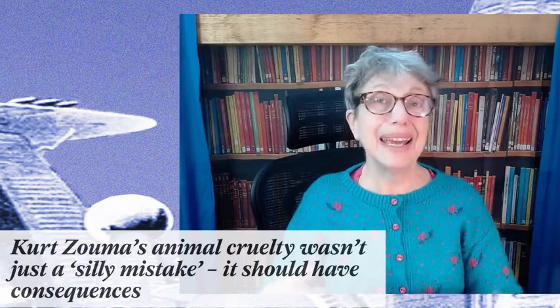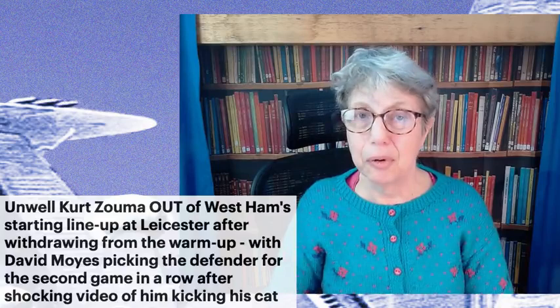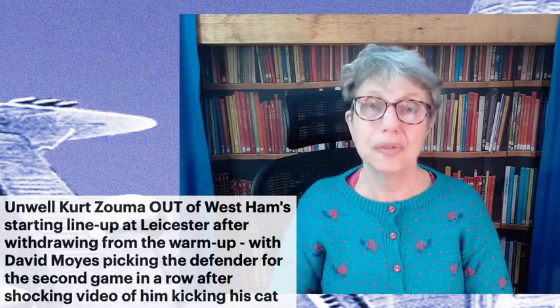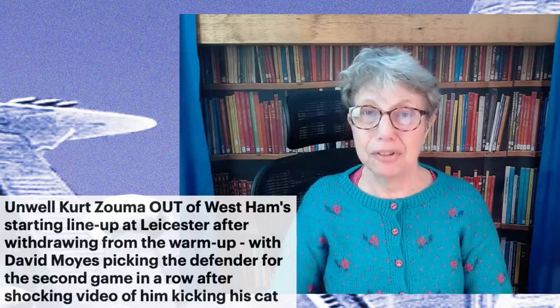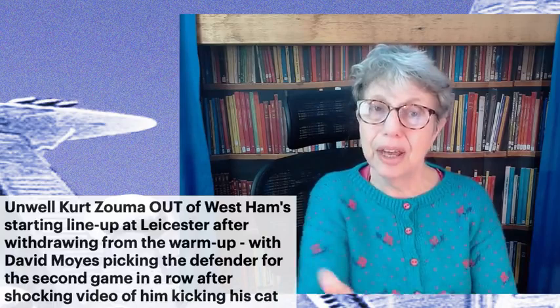The first thing is, this guy is a hefty sort of chap and a very good footballer with a mean kick. And if he wanted to damage that cat physically, he could have done so. It very much looks as if the cat wasn't physically injured, which means that Zouma was pulling his punch or his kick. And he seems to have kicked the cat with the inside of his foot.